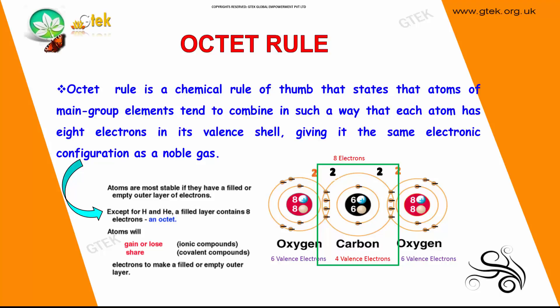Now we will talk about the Octet Rule. It is a chemical rule that states that atoms of main group elements tend to combine in such a way that each atom has 8 electrons in its valence shell, giving it the same electronic configuration as a noble gas.